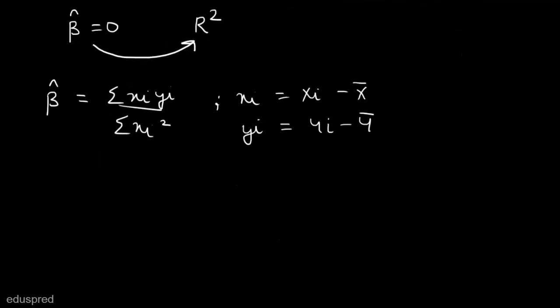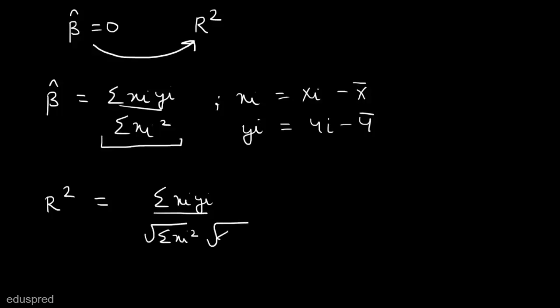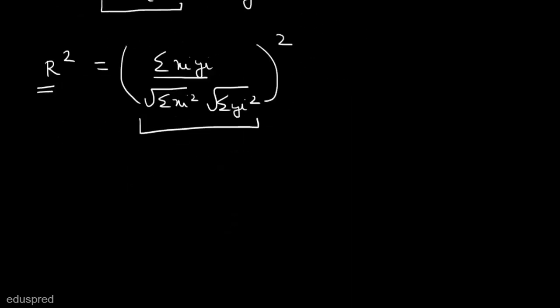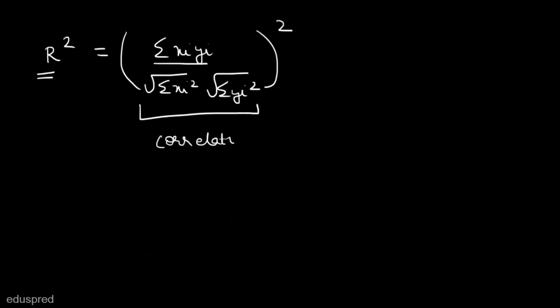Now let's write the formula for R-squared. Since beta hat is written in the form of x and y, let's use the R-squared formula also in x and y. R-squared equals [summation(xi*yi) / (sqrt(summation(xi²)) * sqrt(summation(yi²)))]². The term inside the bracket is the correlation between Y and X. In a simple linear regression model, R-squared equals the square of the correlation between X and Y.